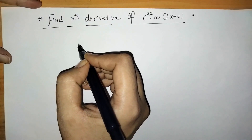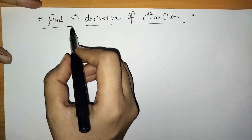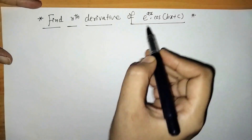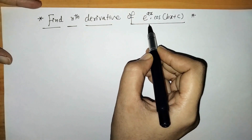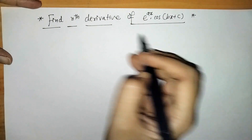Hello everyone, welcome to Unlock Maths. Today we have to find the nth derivative of e raised to ax into cos of bx plus c.